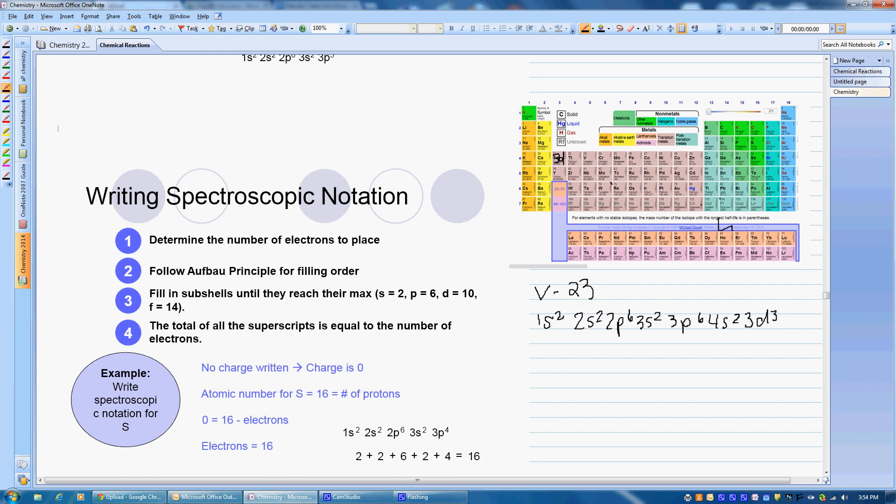Now if we're going to do something more difficult like tungsten, which is 74, my favorite element by the way, okay, we would start at the lowest energy level again, 1s2, 2s2, 2p6. You should start seeing that there's a pattern here each time we start exactly the same way. So if I'm doing an element that's further on in the periodic table than what I just did, I can write exactly the same things to start with.